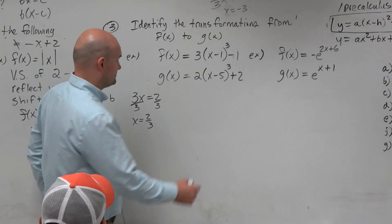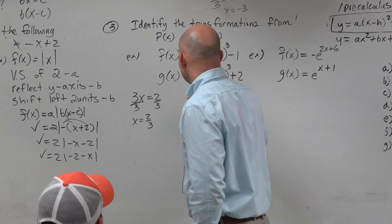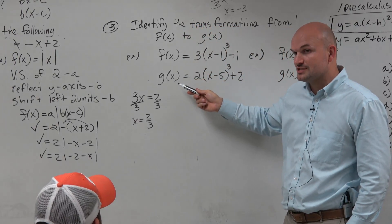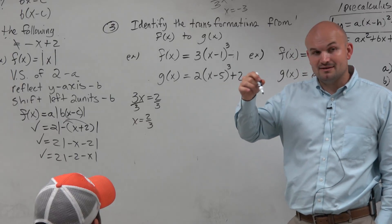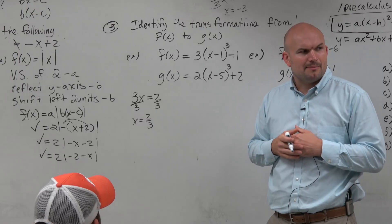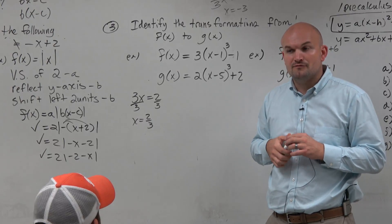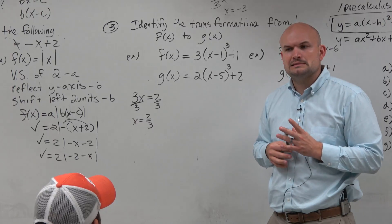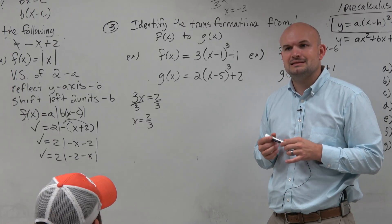Yes. Right. So if I have to multiply this function by 2 thirds, that means I'm going to have to multiply on the outside by 2 thirds. What would that be? First of all, it's going to be vertical, right? Because it's outside. But is that a stretch or a compression? What is the stretch for a 2 thirds?